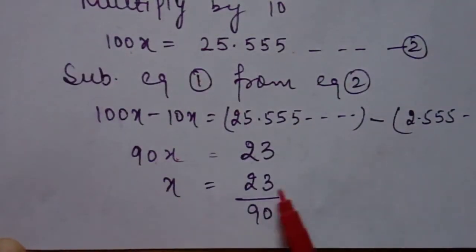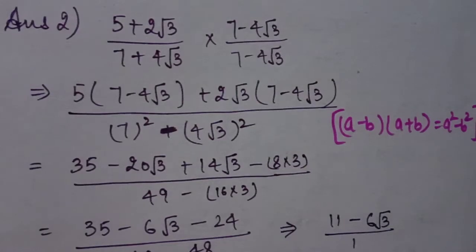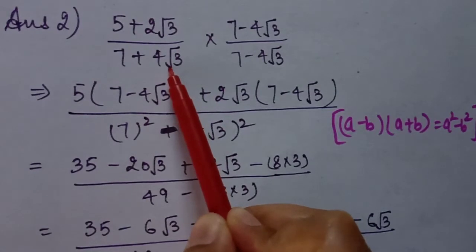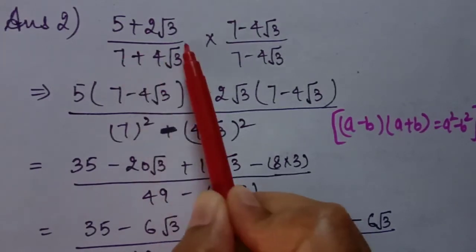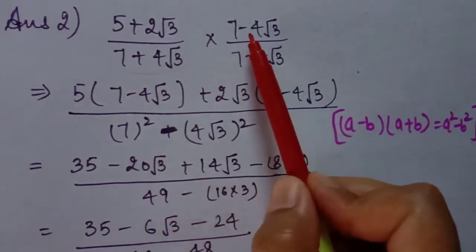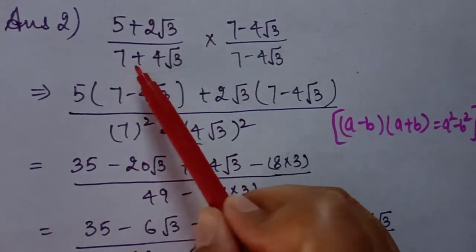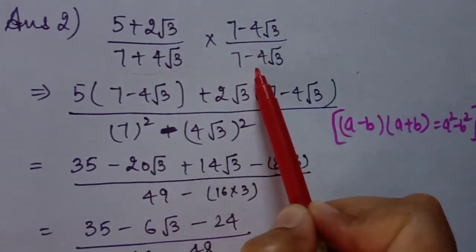Next question: find the value of a. This is a rationalization question because a square root is present in the denominator. We do rationalization by multiplying numerator and denominator by the conjugate — taking the same terms with the opposite sign in the middle. So we multiply by 7 minus 4 root 3 over 7 minus 4 root 3.